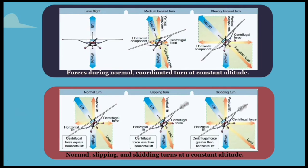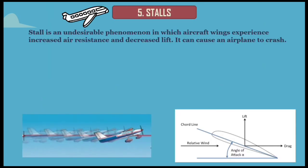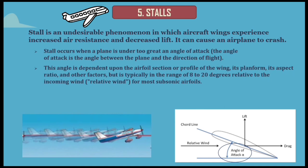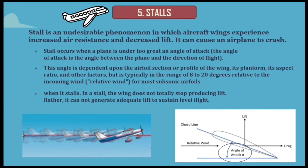Coming to the next topic: stalls. A stall is an undesirable phenomenon in which aircraft wings experience increased air resistance and decreased lift. It can cause an airplane to crash. A stall occurs when a plane is under too great an angle of attack. The angle of attack is the angle between the plane and the direction of flight. This angle is dependent upon the airfoil section or profile of the wing, its planform, its aspect ratio, and other factors, but is typically in the range of 8 to 20 degrees relative to the incoming relative wind for most subsonic airfoils.